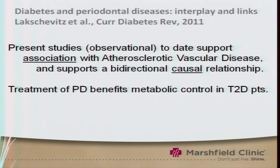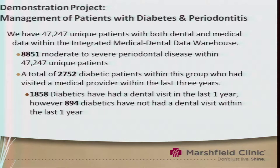There's an error on this slide — this one is about a recent study in diabetes and periodontal disease. Present studies do support an association with type 2 diabetes, and it supports a bidirectional causal relationship between periodontal disease and type 2 diabetes. In our system, we have nearly 2,000 diabetics who've had a dental visit within the last year, and about 900 who have not had a dental visit within the past year.